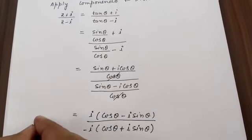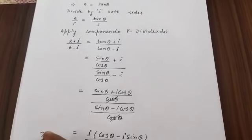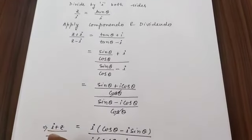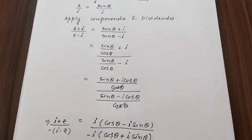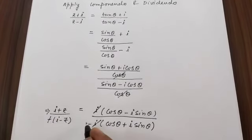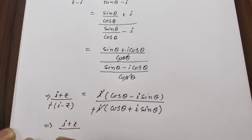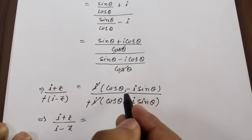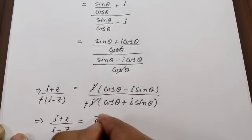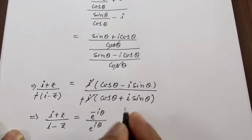Looking at the numerator, we want the form (i+z)/(i-z) as required in the proof. Taking -1 common from the denominator gives (i-z). Now, cos θ - i·sin θ = e^(-iθ) and cos θ + i·sin θ = e^(iθ), so the expression becomes e^(-iθ) / e^(iθ).